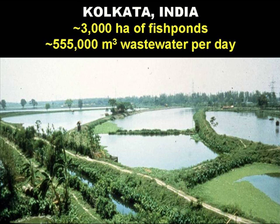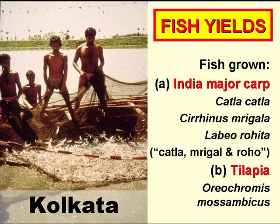This slide shows some of the wastewater-fed fish ponds in Calcutta, India. All of the city's wastewater, some 550,000 cubic meters per day, is used to feed around 3,000 hectares of fish ponds, and these produce just under 20% of the fish consumed in the city. The fish they grow are mainly three species of Indian major carp, with some tilapia as well. The slide shows the fish being harvested — this is normally done at around 5 o'clock in the morning, to get the fish to the markets early in the day.